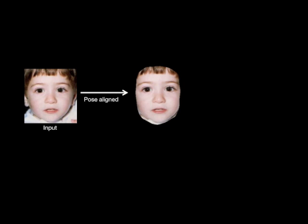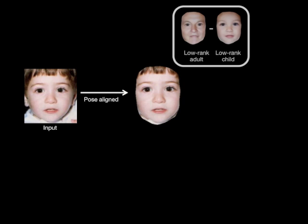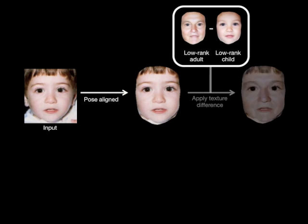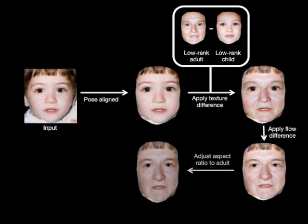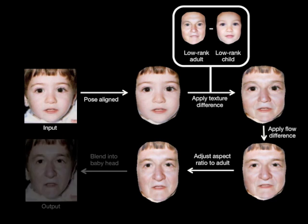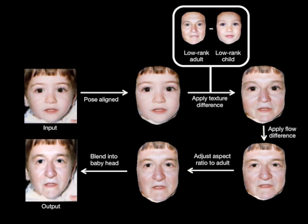First, we frontalize the pose. Then we add to the input the lowpass texture difference between the targets and input averages, as well as the flow difference. We also adjust the aspect ratio before finally blending it back to the original photo.